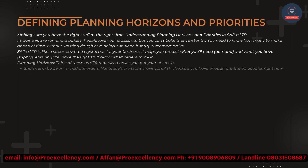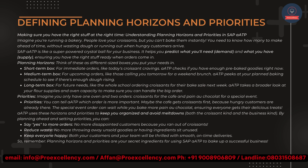Defining Planning Horizons and Priorities — making sure you have the right stuff at the right time, understanding planning horizons and priorities in SAP ATP. Imagine you're running a bakery. People love your croissants, but you can't bake them instantly. You need to know how many to make ahead of time without wasting dough or running out when hungry customers arrive. SAP ATP is like a super-powered crystal ball for your business — it helps you predict what you'll need (demand) and what you have (supply), ensuring you have the right stuff ready when orders come in.